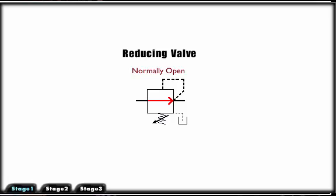A normally open pressure control valve has primary and secondary passages connected. Pressure at the bottom of the spool is sensed from the pilot line which is connected to the secondary port.